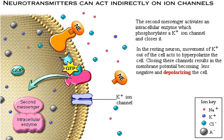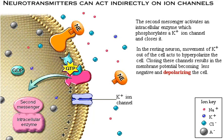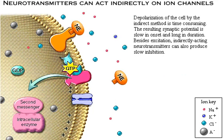In the resting neuron, movement of potassium out of the cell acts to hyperpolarize the cell. Closing these channels results in the membrane potential becoming less negative and depolarizing the cell. Depolarization of the cell by the indirect method is time-consuming. The resulting synaptic potential is slow in onset and long in duration.